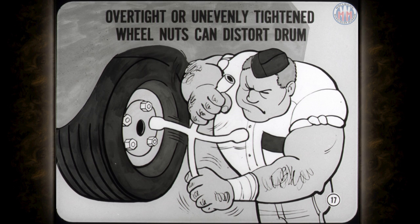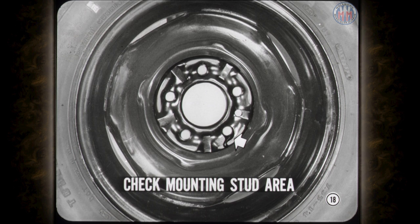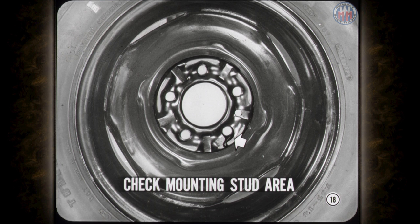Over-tight or unevenly tightened wheel nuts can distort a drum and cause irregularities, so be careful with those impact tools and big wrenches. Sometimes you can cure or reduce brake chatter by re-torquing the wheel nuts properly. Also check the wheel mounting stud area for thick paint accumulations or other high spots. The mounting surface — the wheel — must be even, or the drum may become distorted when the wheel nuts are tightened. It's best to tighten the wheel nuts evenly and in proper star pattern sequence with a torque wrench: first snug the nuts to about 30 foot-pounds, then in the same star pattern sequence, tighten the nuts to 60 foot-pounds.